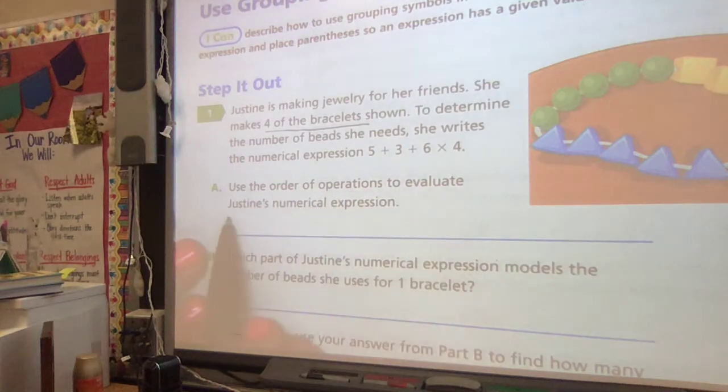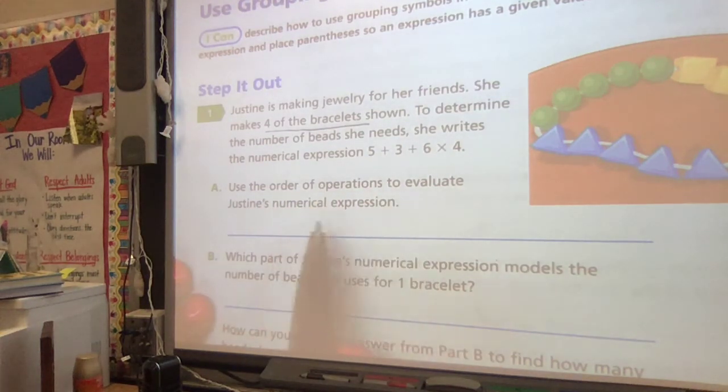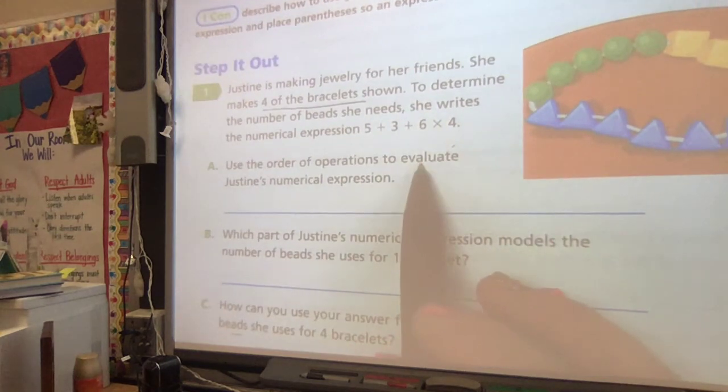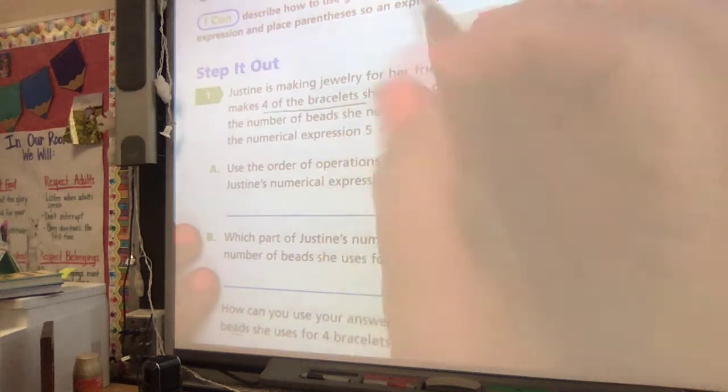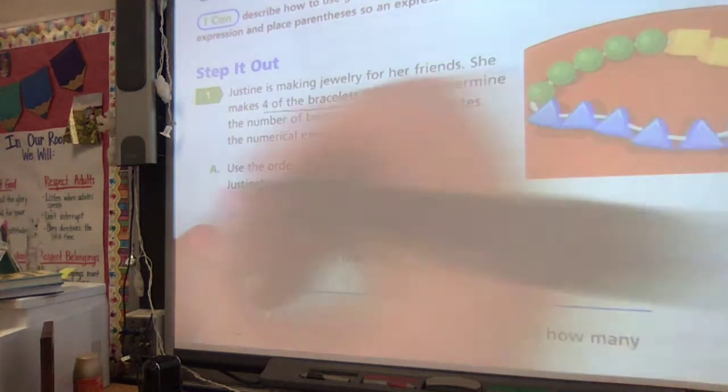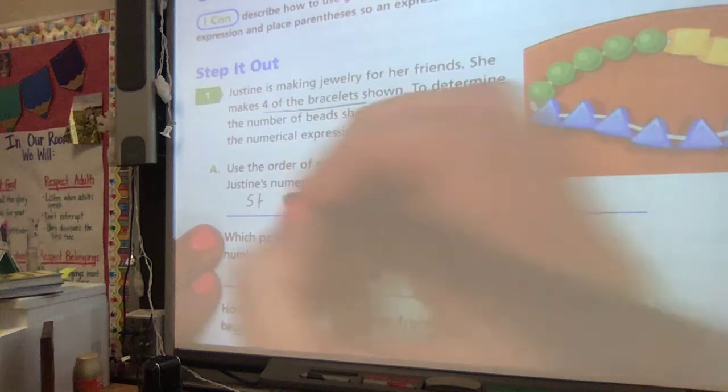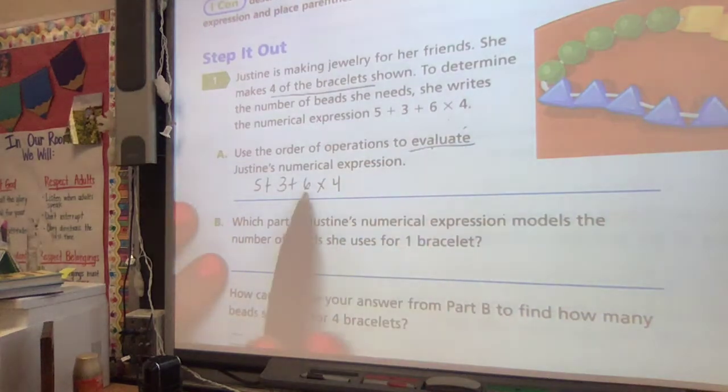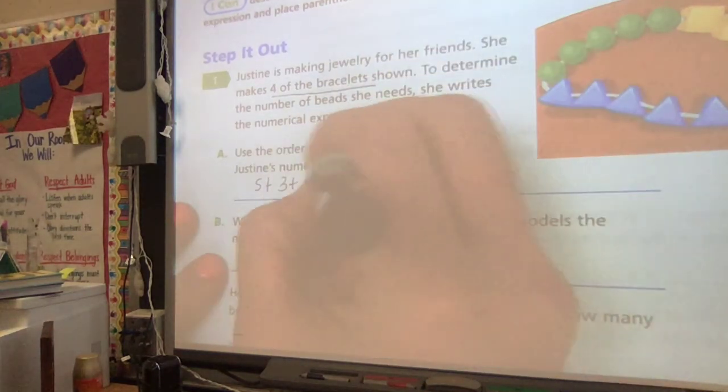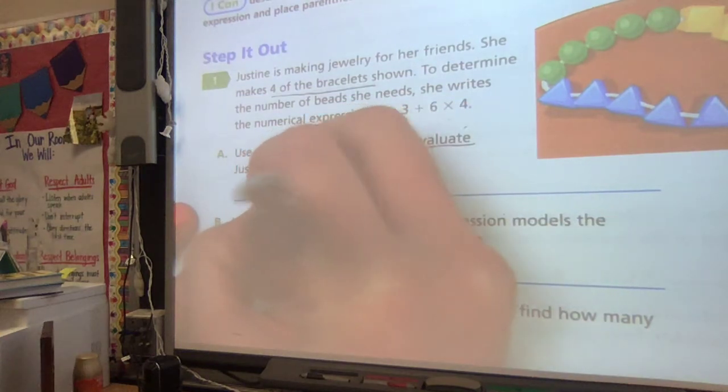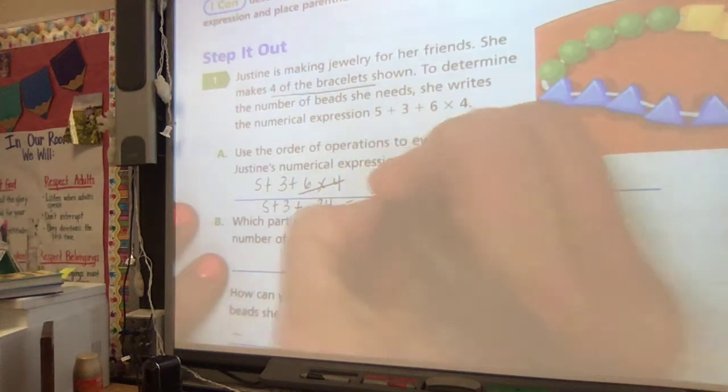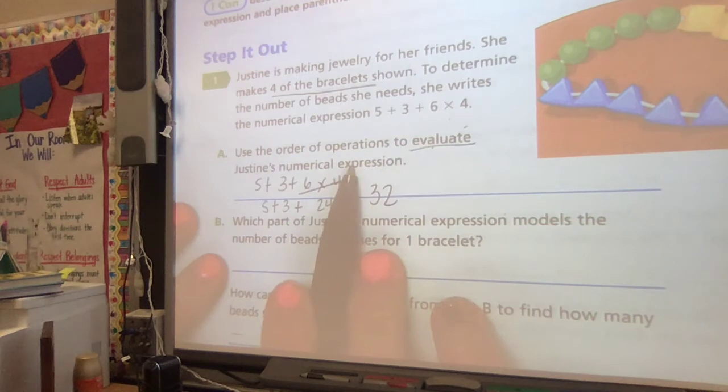Use the order of operations to evaluate Justine's numerical expression, the way that she wrote it. So she wrote 5 plus 3 plus 6 times 4. If we're using our order of operations, first we should multiply, and 6 times 4 is 24. 5 plus 3 plus 24, so then I can add 5 plus 3 is 8, plus 24 is 32. So I get 32 when I use her expression.